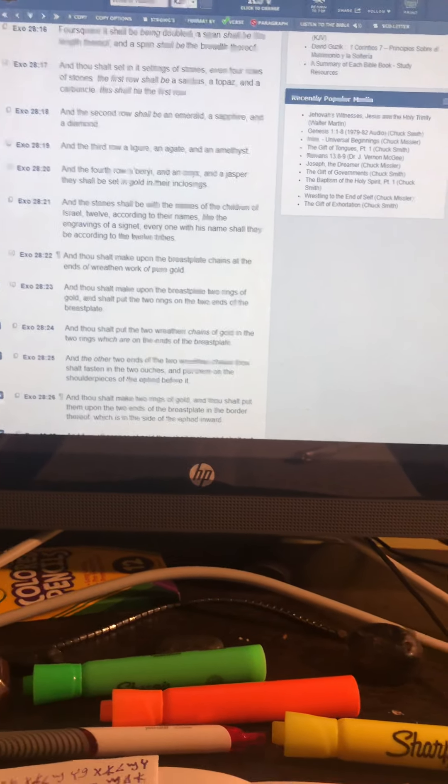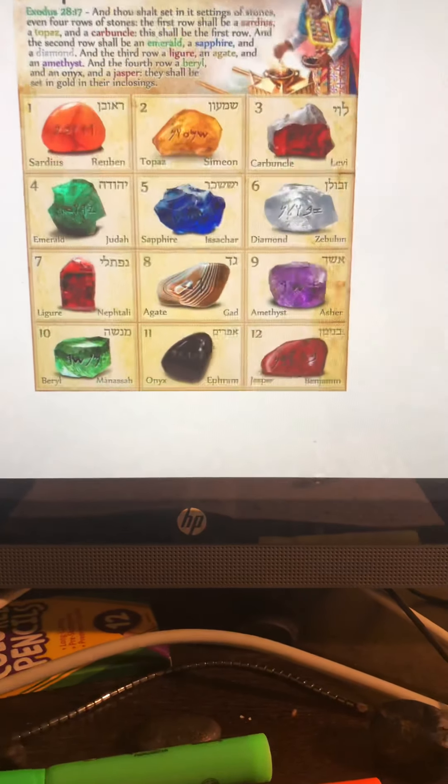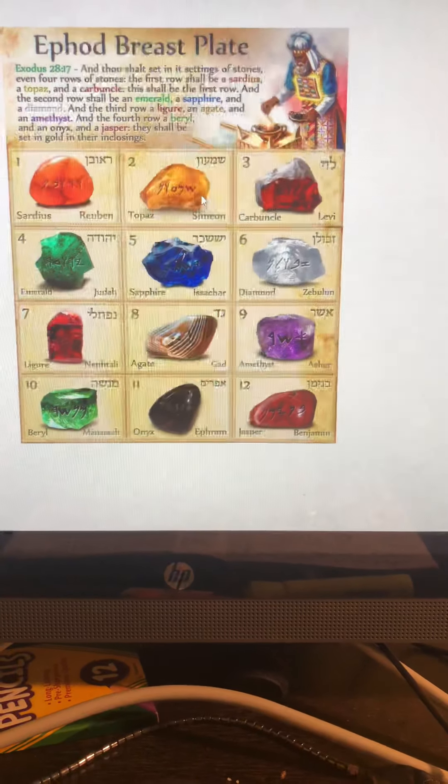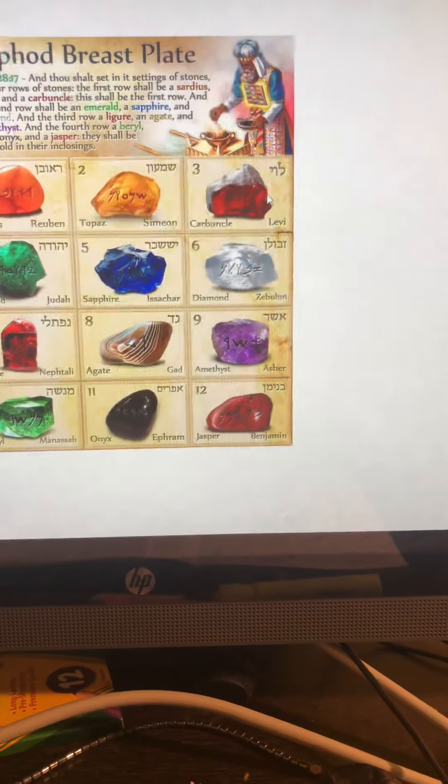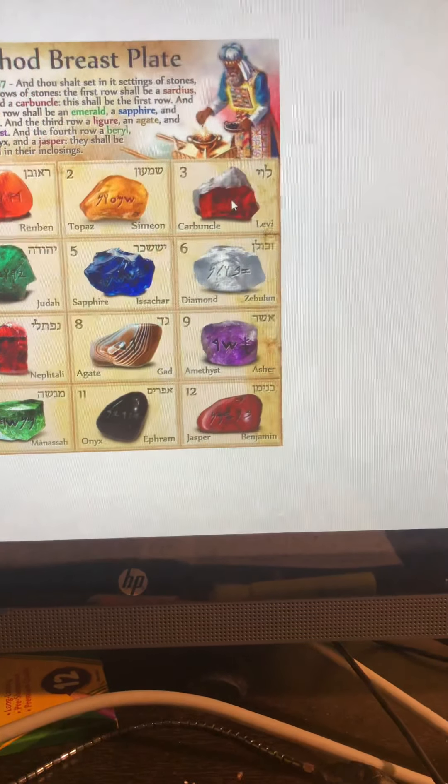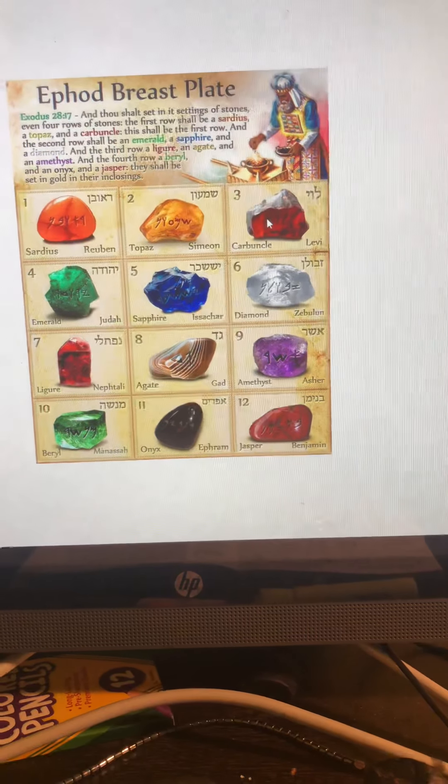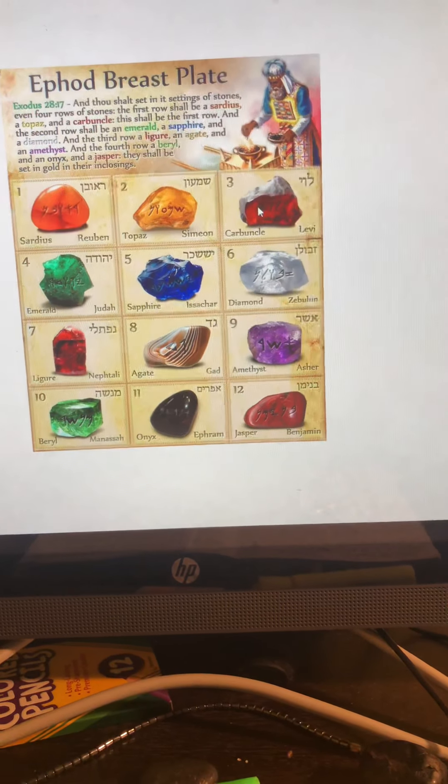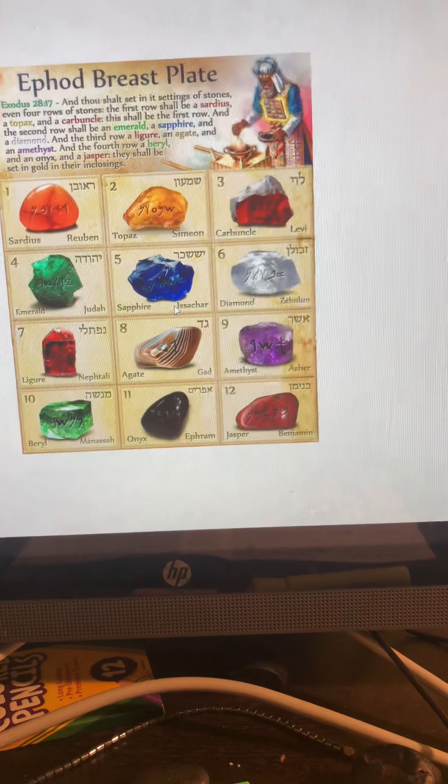The second is a topaz, which is for Simeon, who was the second born. And the third is my tribe, which is Loya, which is carbuncle, and that's the first row. All of these stones have specific powers and different vibrations attached to it, and they actually coincide with the spirit of each tribe.